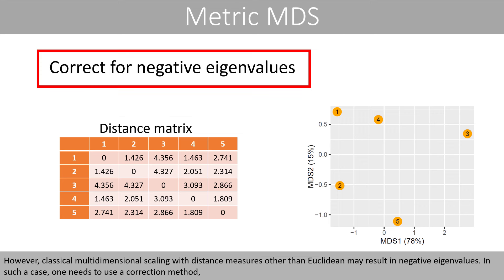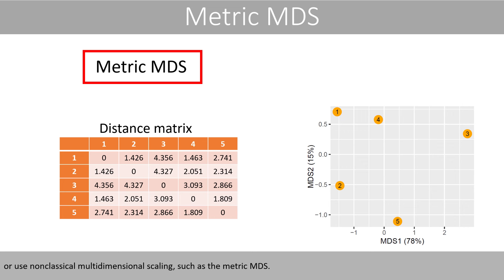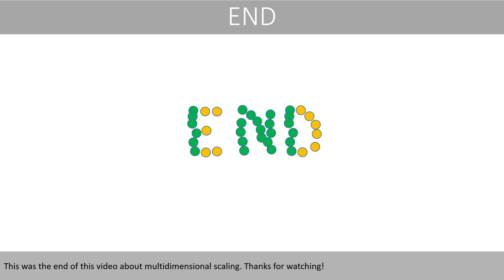Remember that you can use other distance matrices that might be more suitable to define similarity or dissimilarity in your data. However, classical multidimensional scaling with distance measures other than Euclidean may result in negative eigenvalues. In such a case, one needs to use a correction method, or use non-classical multidimensional scaling, such as metric MDS. This was the end of this video about multidimensional scaling. Thanks for watching!